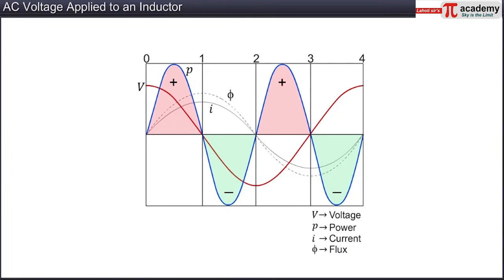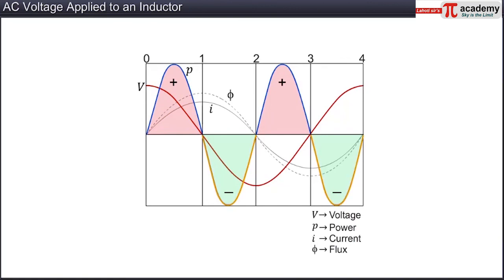Thus, the instantaneous power in the inductor is positive when both the instantaneous voltage and the instantaneous current are positive or both negative, and the power is negative when any one of the instantaneous voltage or instantaneous current is positive and the other negative.